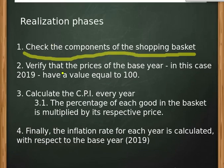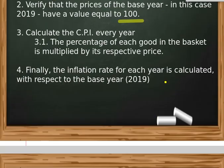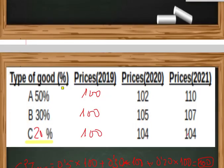Second, verify that the price of the base year — in this case 2019 — has a value equal to 100. We go to the prices in 2019 and we write 100.